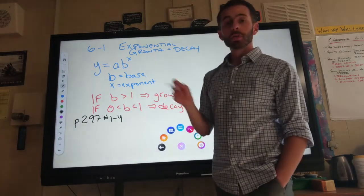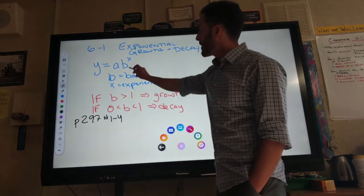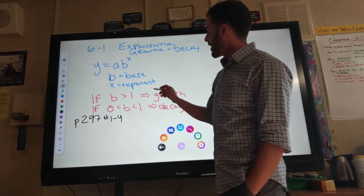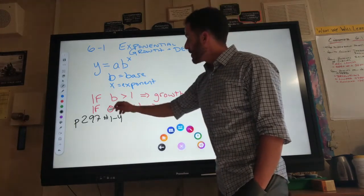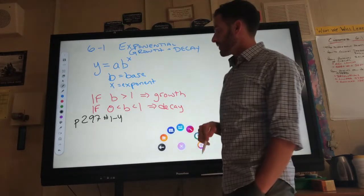You need to know the difference between growth and decay by looking at an equation. If b is greater than 1, so if the base is bigger than 1, then you're going to get growth. And if the base is between 0 and 1, you're going to get decay.